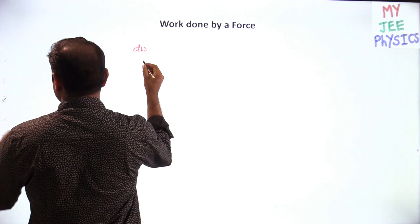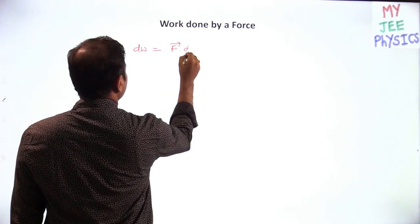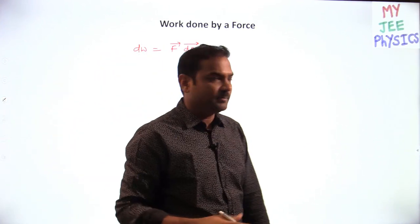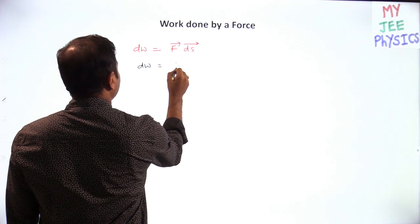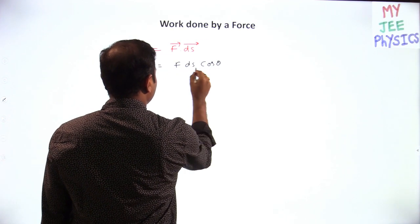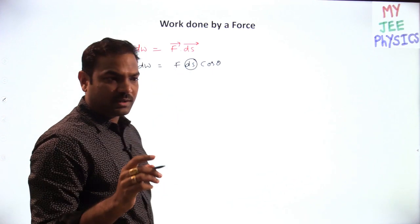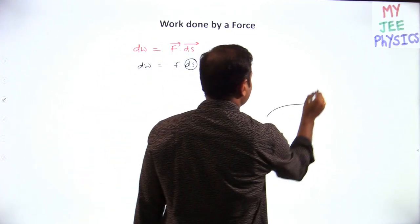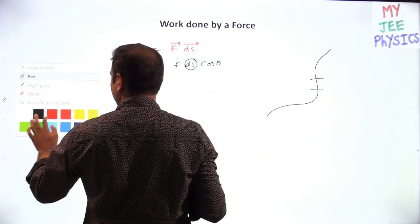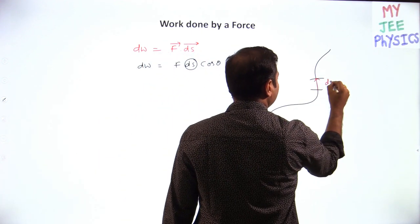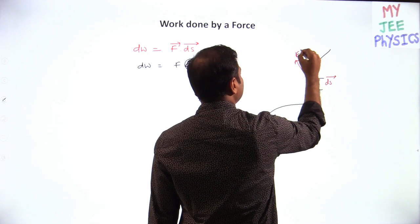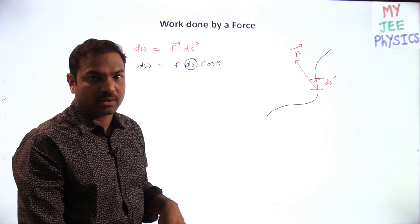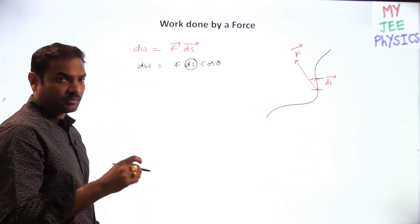When it comes to work done by a force, the very general principle is: work done is equal to F̄ · ds̄. So work done is equal to F into ds into cos θ. Here ds is defined for a very small displacement in the entire path. Suppose this is the path — I am taking a very small part ds vector, and the force vector is something like this, so work done in that small part is given by this formula.